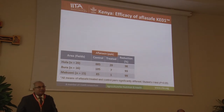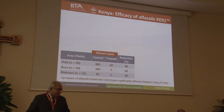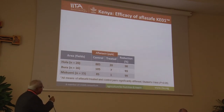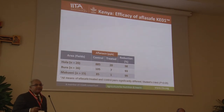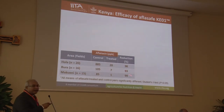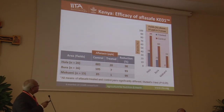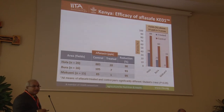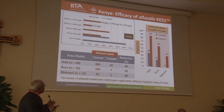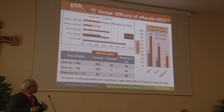Kenya is one of the hotspots of aflatoxin contamination — that's where people have died because of aflatoxin poisoning. In two National Irrigation Board areas, which are high-input areas where aflatoxin poisoning deaths have occurred, treated versus control fields showed 93 to 99% reduction in contamination. Looking at the number of fields with more than 10 ppb, in an area where people had died, all the grain from treated fields is actually safer to eat. You can basically shift the entire toxin contamination to a safer level.